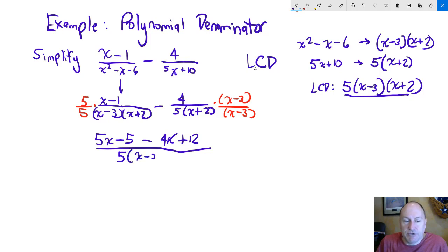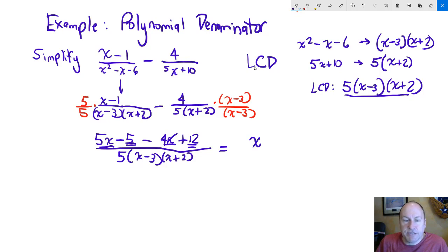All over the common denominator 5 times x minus 3 times x plus 2. Now, combining like terms: 5x minus 4x is x, and negative 5 plus 12 is plus 7, all over that common denominator. And that is the answer.